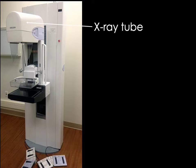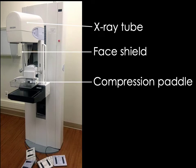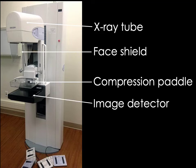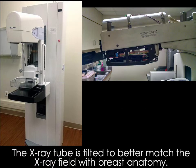The first component is the x-ray tube, located in the upper part of the machine. Next is the face shield, a plastic piece used to keep the patient's head and neck out of the imaging field of view. Then we have the compression paddle, which is raised and lowered to adequately compress the patient's breast. And finally, there's the breast support, which lays over the image detector — a digital detector in this system. One thing to note is that the x-ray tube is at an angle, done to better match the x-ray field with breast anatomy.